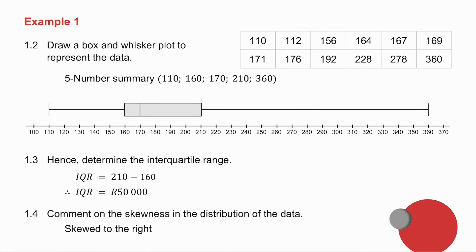1.2 asks you to draw the box and whisker diagram. You have the smallest value, you have the largest value, the median you have already worked out. To calculate the lower quartile, you take the data that is below the median, and you find the median of that data. So halfway between 156 and 164, add them together, divide by 2, and there's your lower quartile.